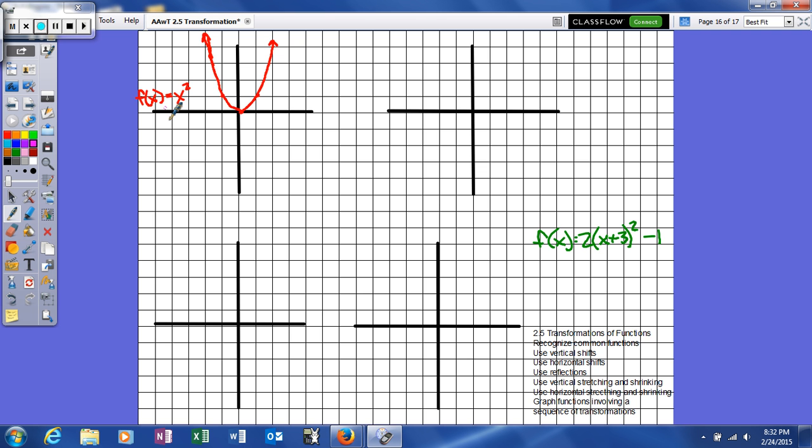So this is f of x equals x squared, and what we want to try to get is f of x equals 2 parentheses x plus 3 in parentheses squared minus 1. So again, we're going to do the rules.